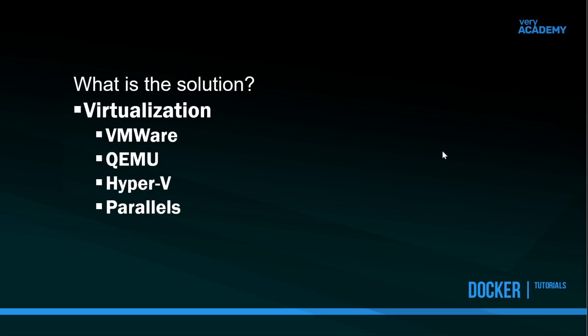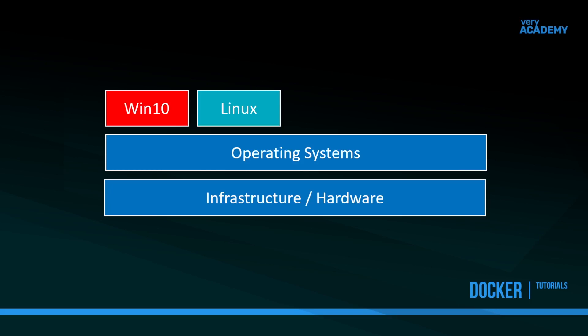On our computer we have an operating system installed. What if we could make a box or a container inside our operating system and install another operating system inside that box, and then run that box independently on our existing computer as a new operating system? We've got many virtualization tools whereby we can install software that creates these new boxes, and we can install an operating system on top of our operating system inside this container and run it individually in addition to our existing operating system. So: hardware, operating system, and then containers or boxes inside the operating system where we install the different operating systems we want to use.